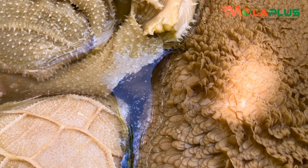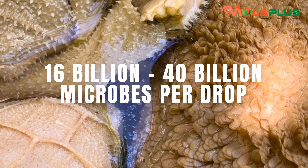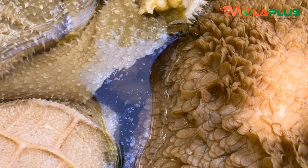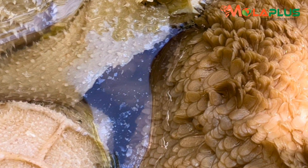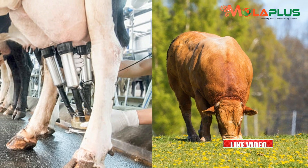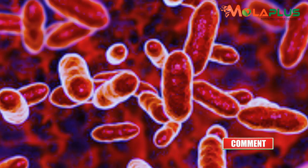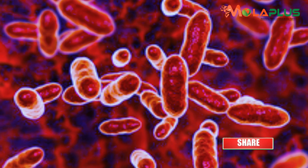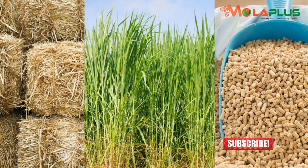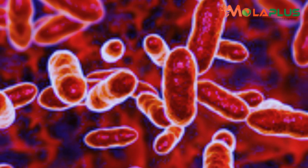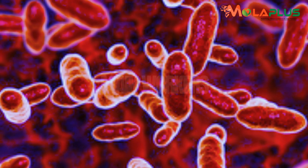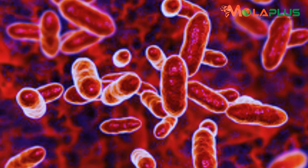The liquid in the rumen of a cow has between 16 billion and 40 billion microbes per drop. The higher the population of microbes, the more efficient the digestion. The more efficient the digestion, the higher the productivity and the lower the cow dung output. Microbes optimize what a farmer gets out of everything they purchase for their animals. These are specific, non-pathogenic microbes and they are the main workers inside the rumen of a cow.